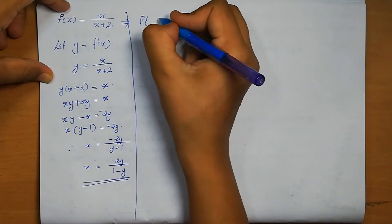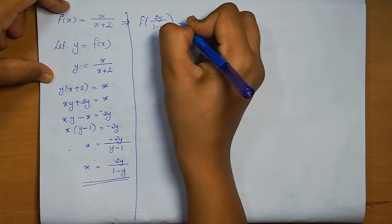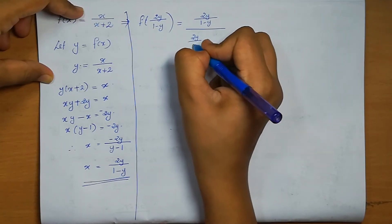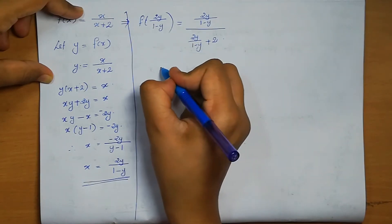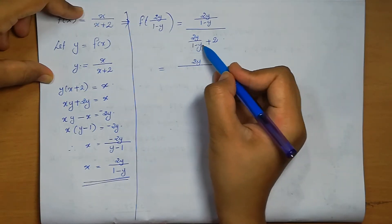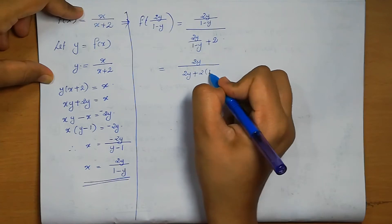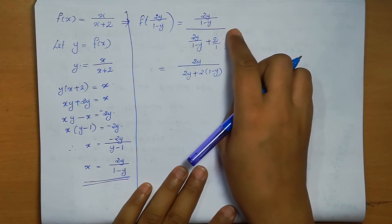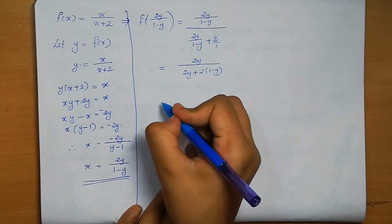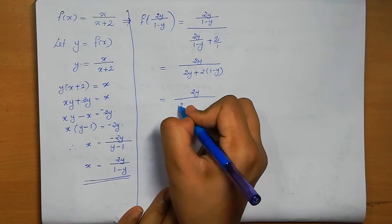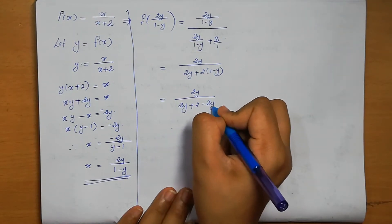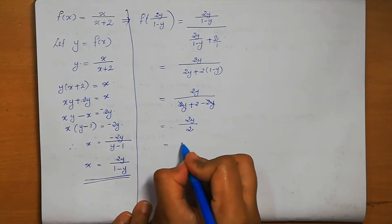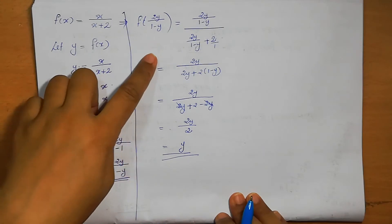Instead of x, we write f(2y/(1-y)). That equals 2y/(1-y) divided by [2y/(1-y) + 2]. Simplifying: 2y divided by [2y + 2(1-y)], since (1-y) cancels. Opening the bracket: 2y/(2y + 2 - 2y). The 2y terms cancel, giving 2y/2 = y. So f(2y/(1-y)) = y.